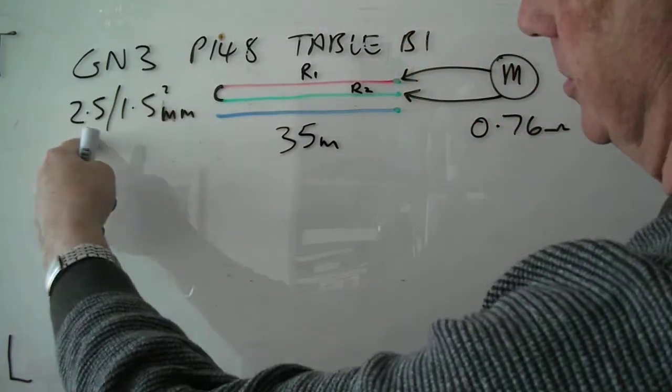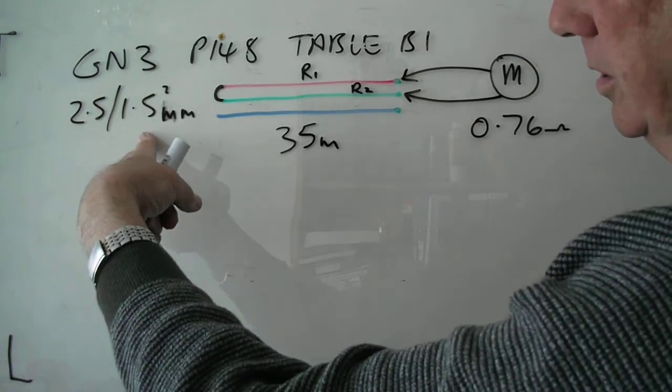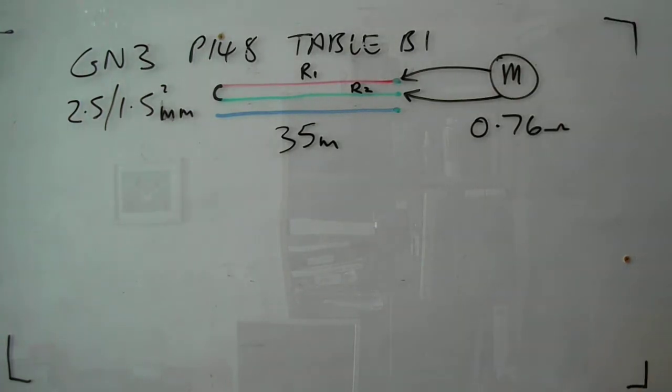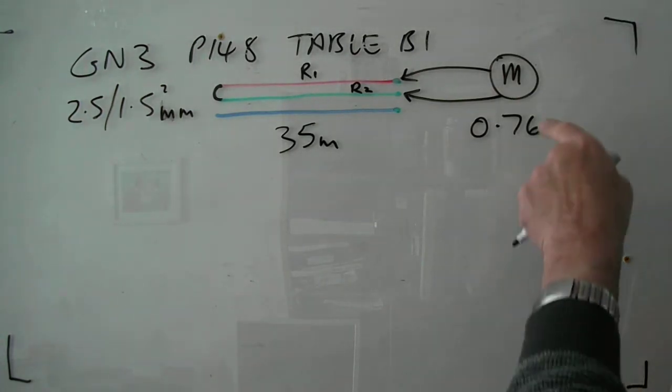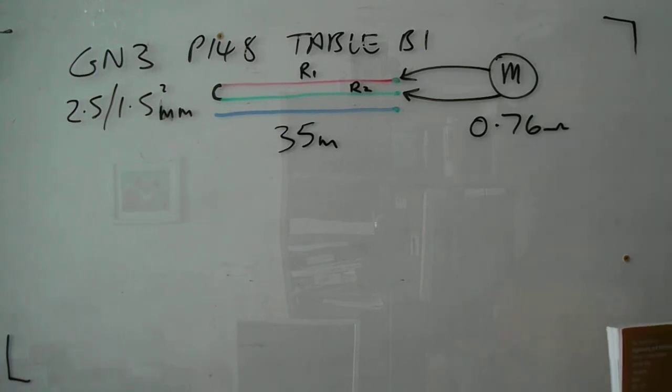So in other words R1 is 2.5 and R2 is 1.5 and that's twin and earth. So we go there and we measure 0.76. What we want to do is find out if that's a correct sort of figure that we're looking for. Is it high or is it low? What should it be?